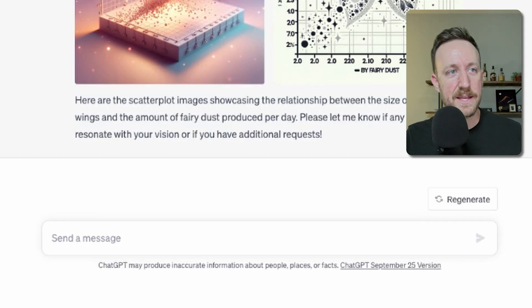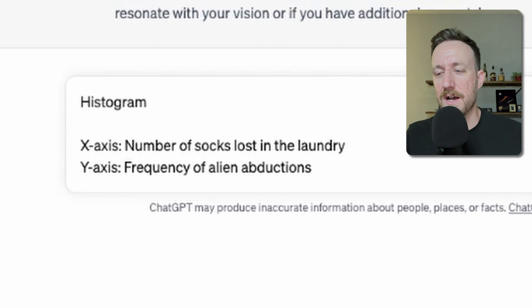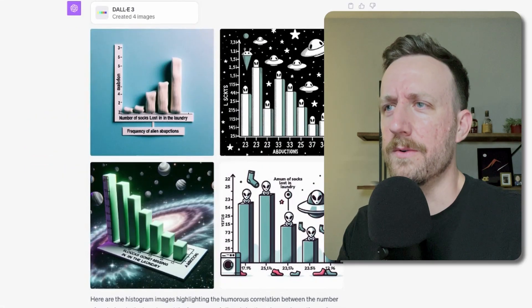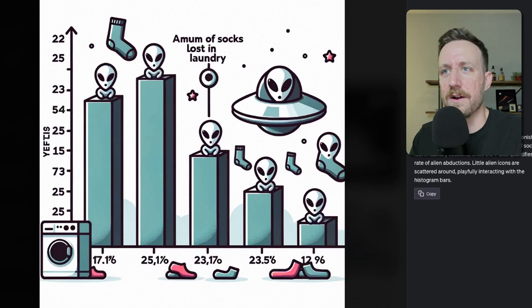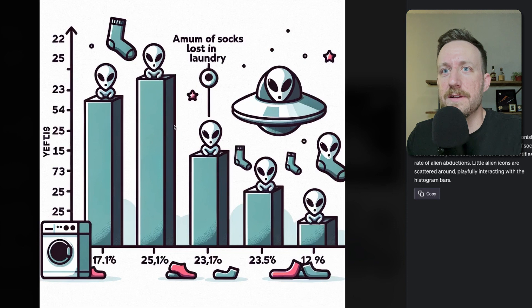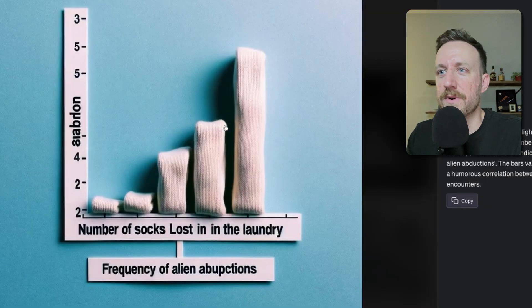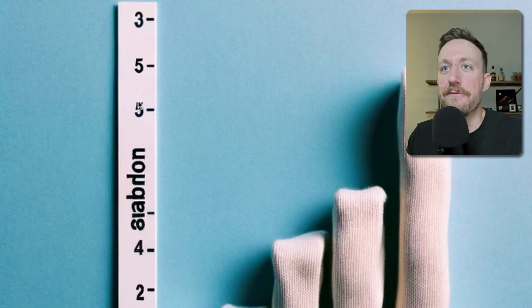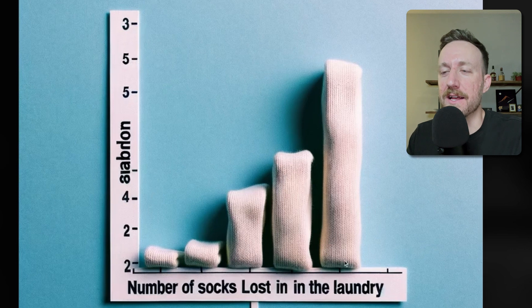Next up is a histogram where the x-axis is the number of socks lost in the laundry and the y-axis is the frequency of alien abductions. I like the cartoony kind of animation — you got the aliens on top of the bars and some socks floating around. That's fun. This one has real-looking socks. So five alien abductions and lots of socks.